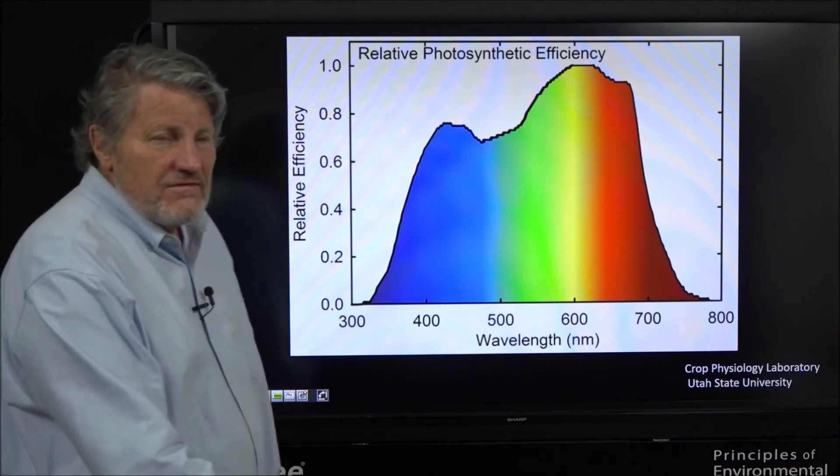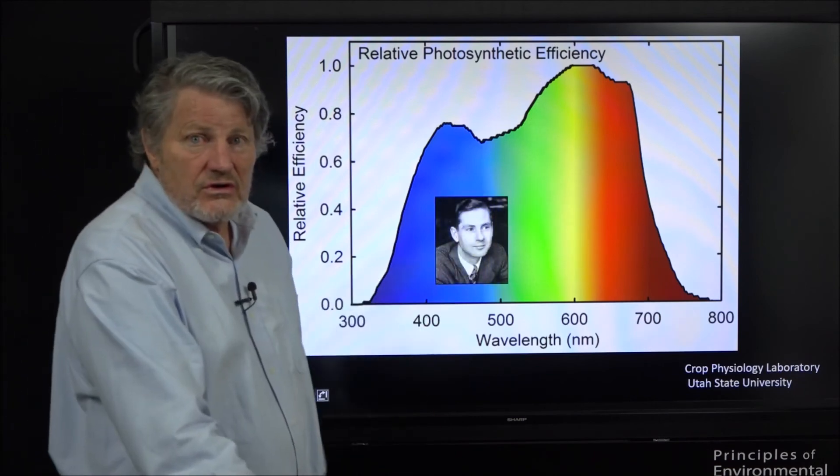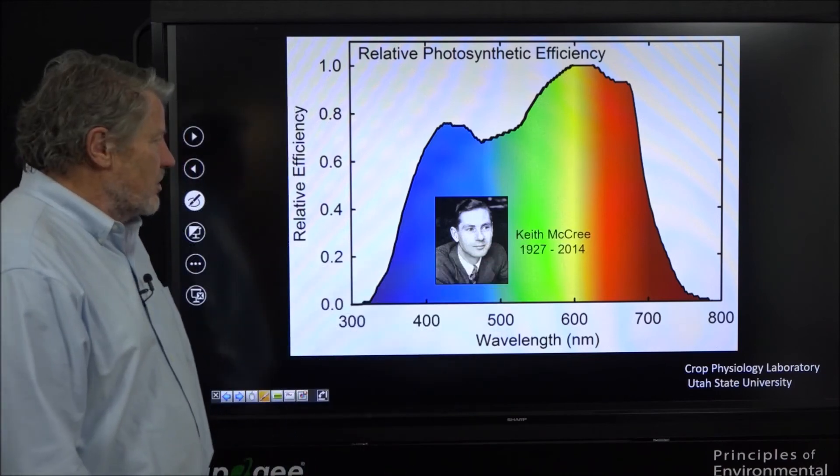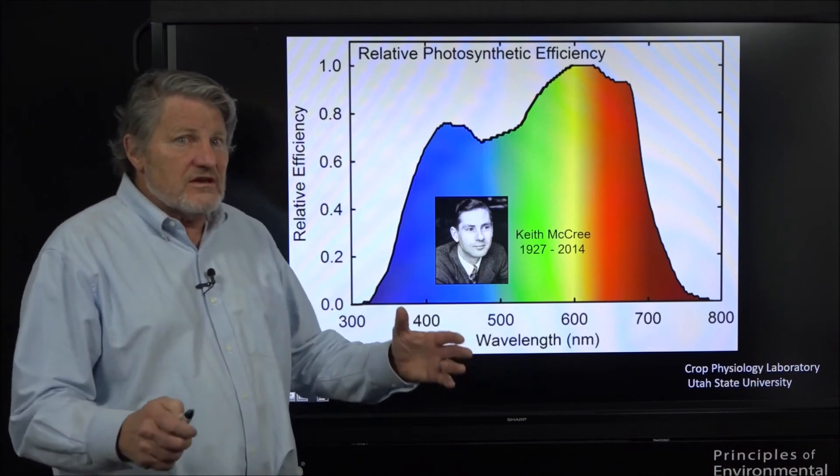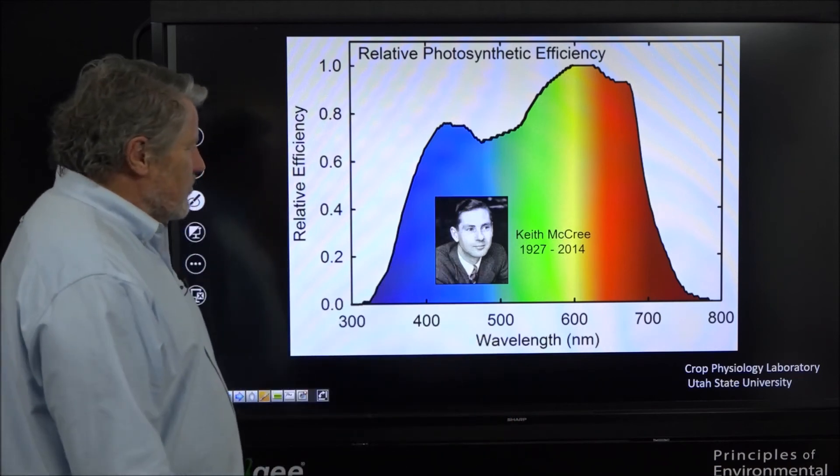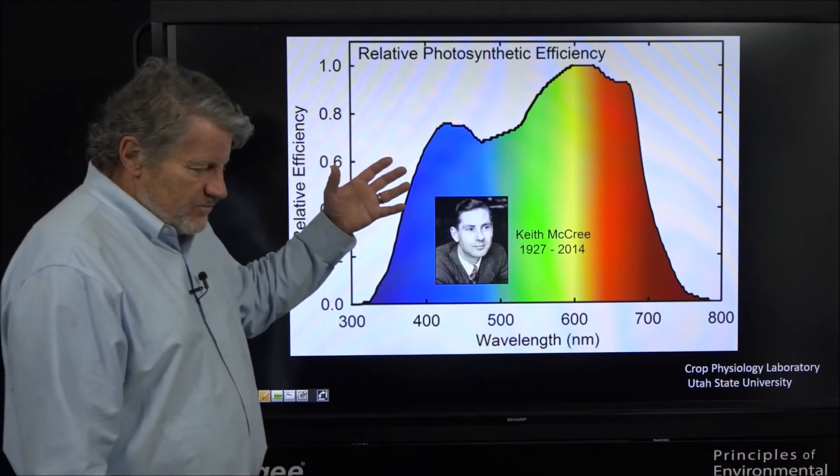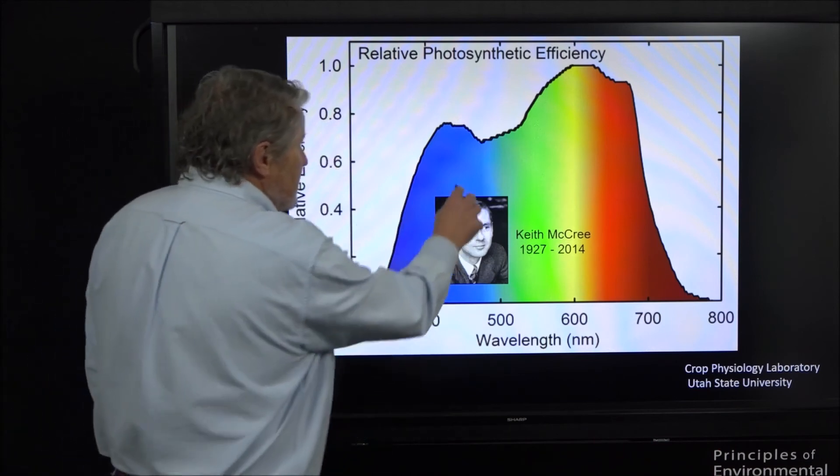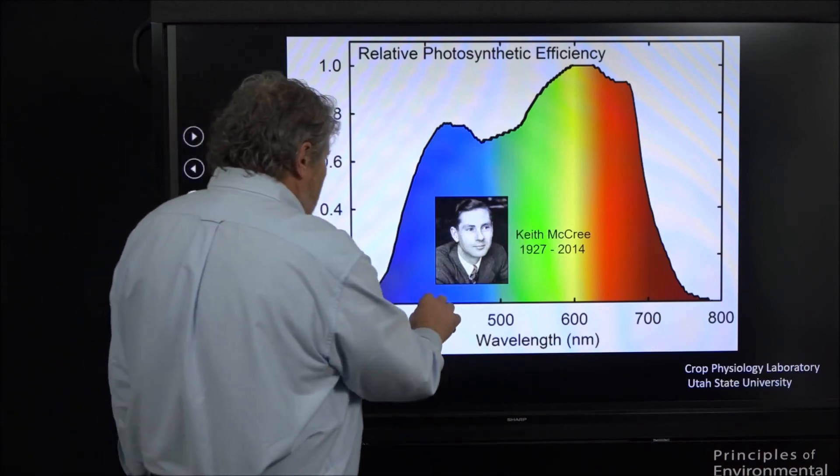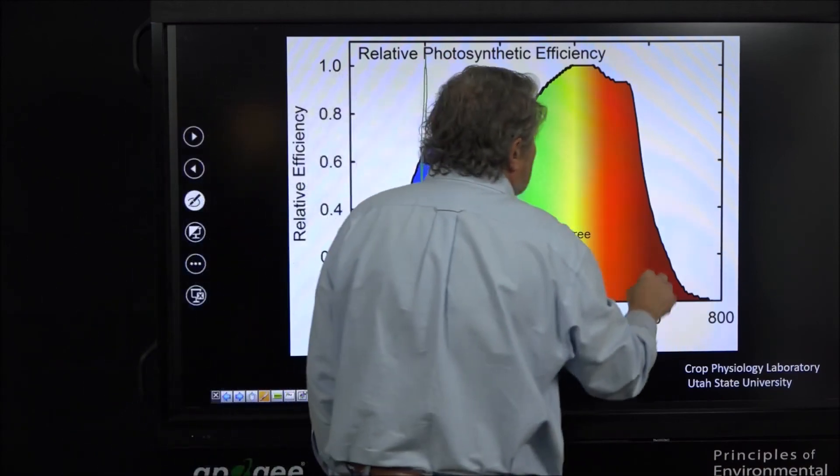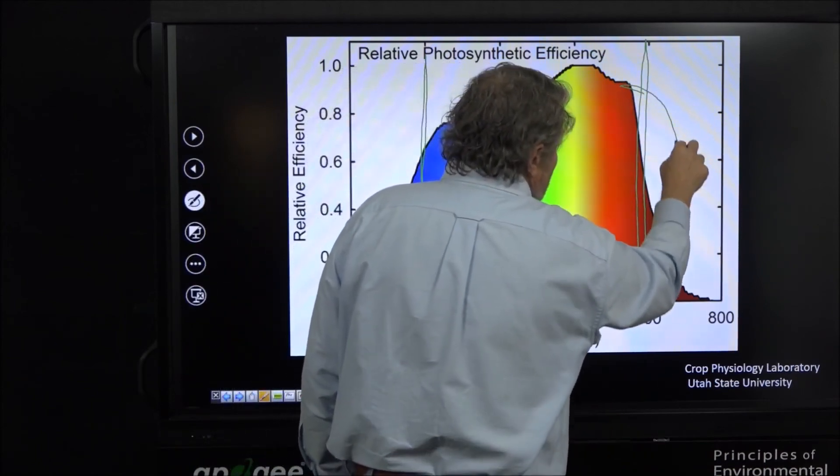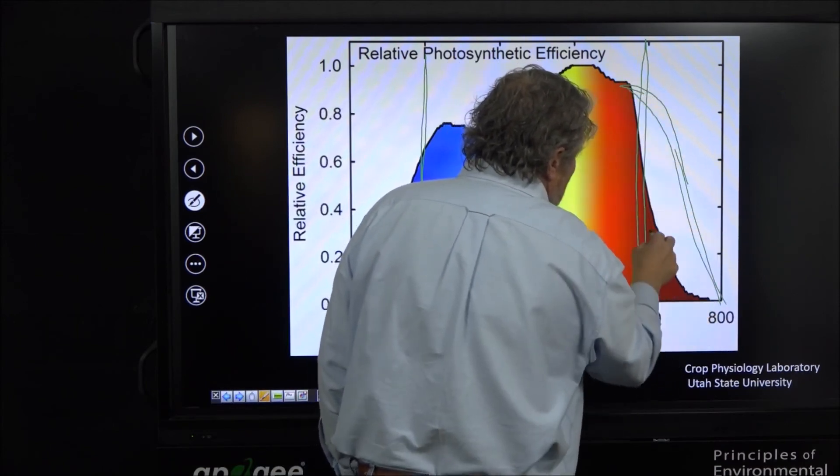This is the very famous McCree curve. Here's a picture of Keith McCree as a young scientist. He died just a few years ago. He had a long and distinguished career. He was a physicist that came across to biology. He said oh my, these biologists need help, and he brought excellent physics background with him. This is his curve of how the colors of light caused photosynthesis. It's called the McCree curve now and he said let's call it good, we'll cut this off at 400 and 700.